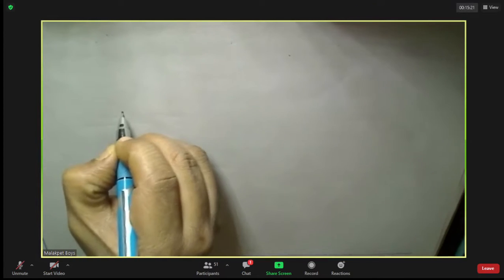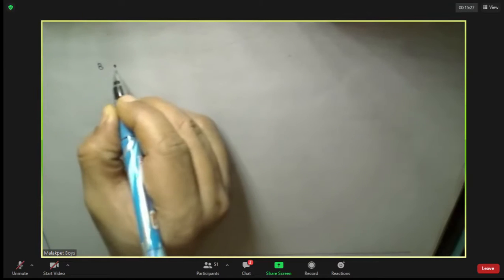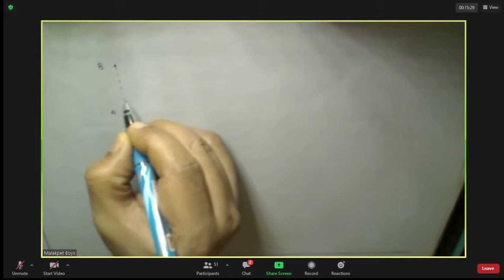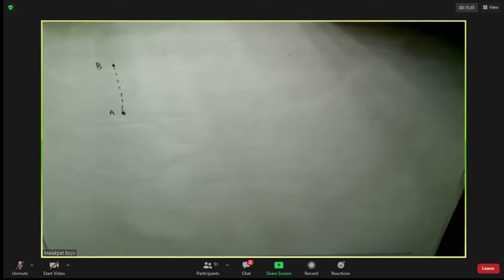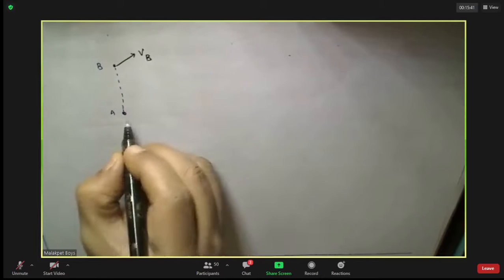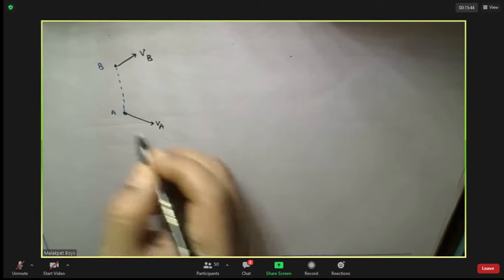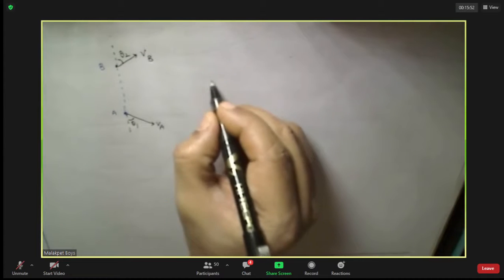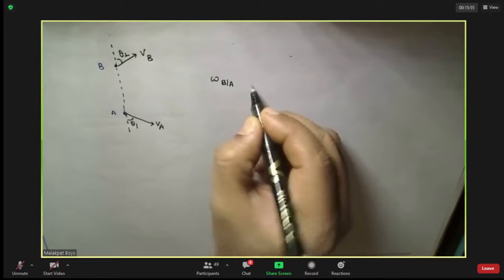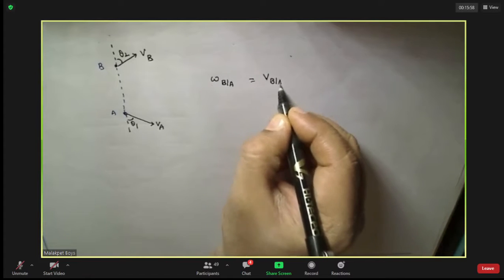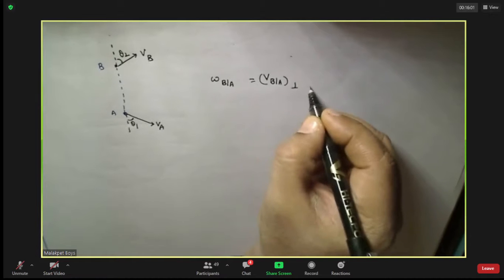See the pose, this is B. Two particles are there. This particle has velocity VB. This particle has velocity VA. This is theta two. Now I want to know angular velocity of B with respect to A. As per the question, B with respect to A, perpendicular to AB.